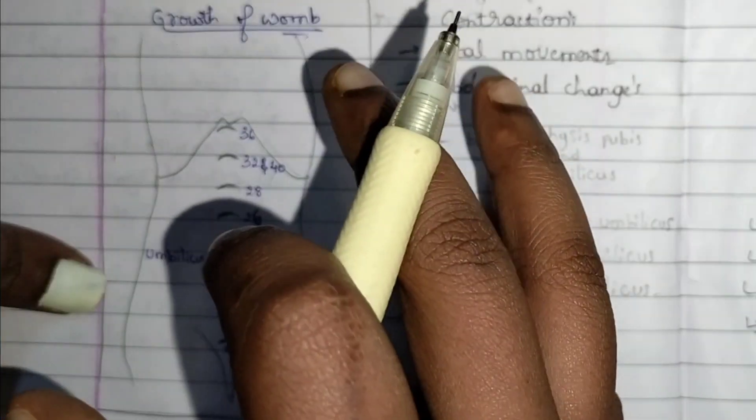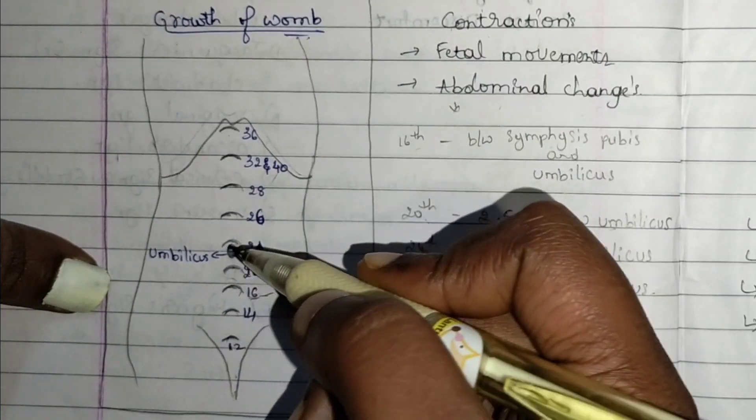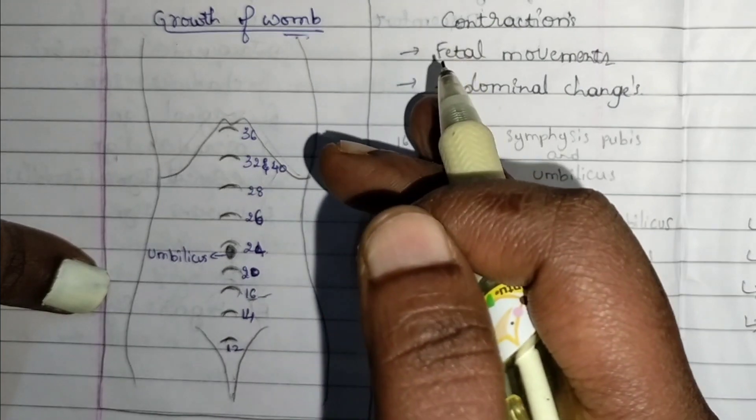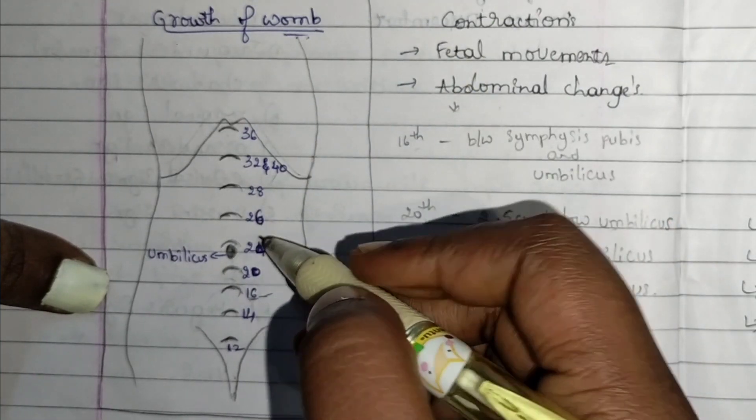At 24th week, the uterus will be exactly at the umbilical level. If there's a question about when the uterus reaches umbilical level, the answer is 24th week.